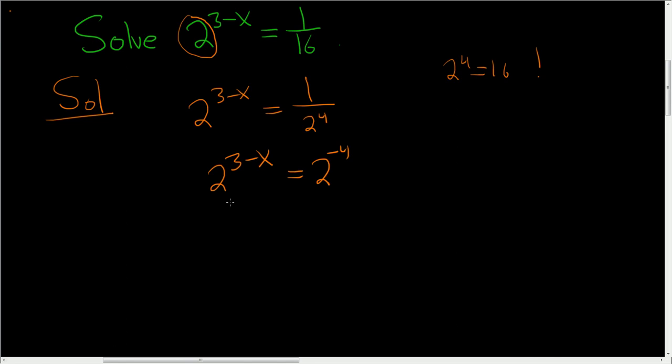Now whenever the bases are the same, they go away. So you end up with 3 minus x equals negative 4. Subtract 3. Negative x equals negative 7. And so x equals 7.